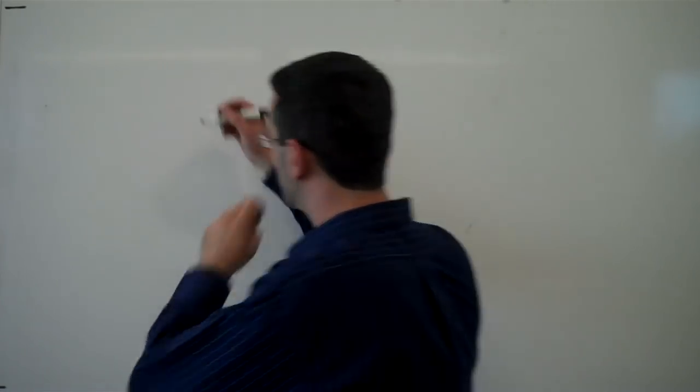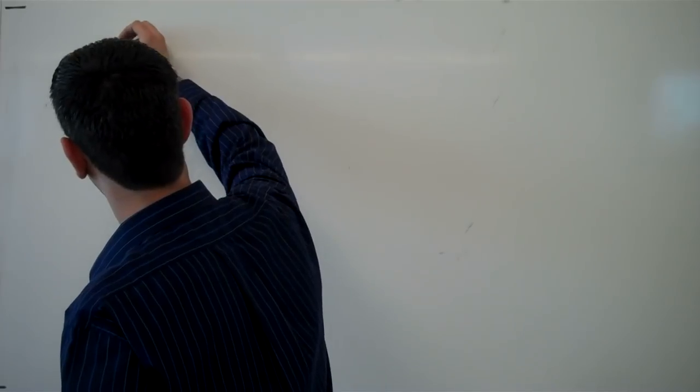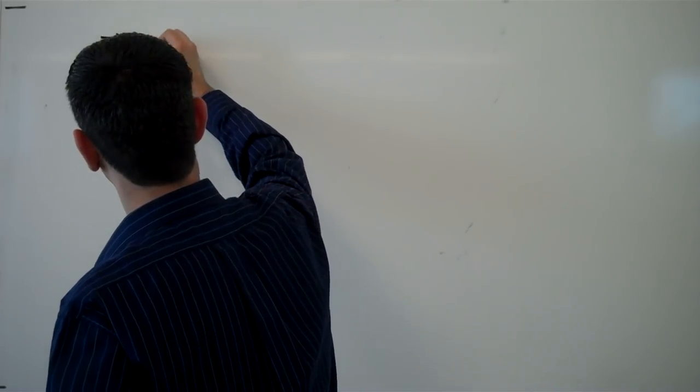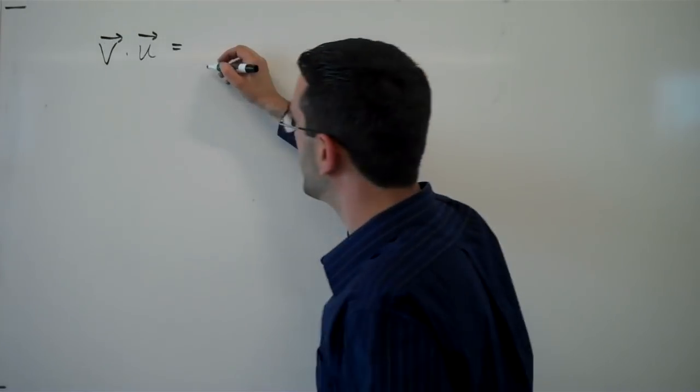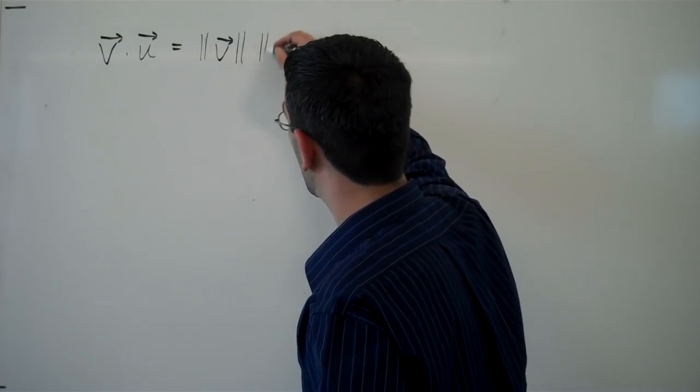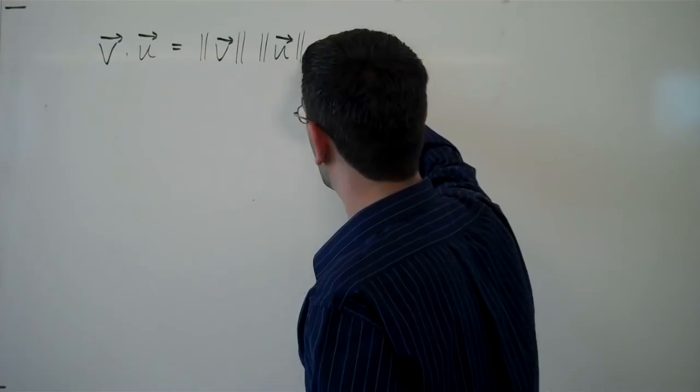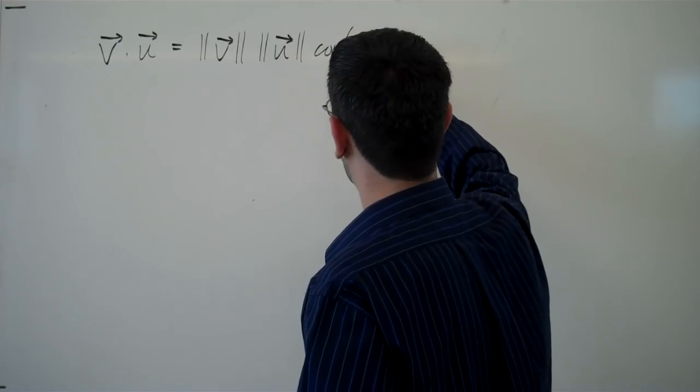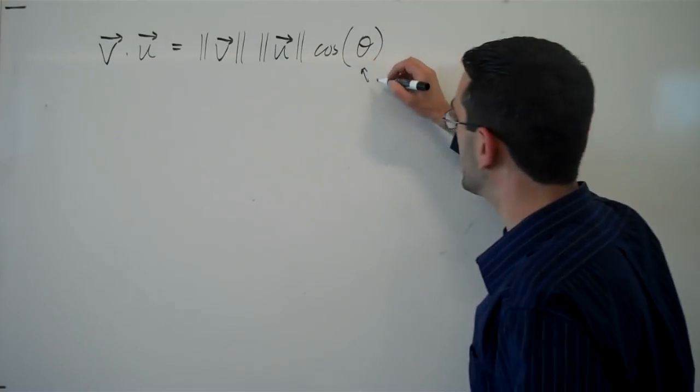The geometric interpretation of the dot product says that the dot product of vectors v and u is equal to the magnitude of the vector v times the magnitude of the vector u times cosine of the angle between the vectors.